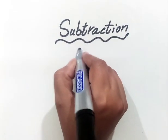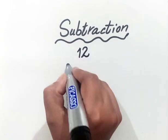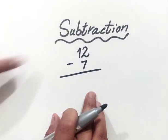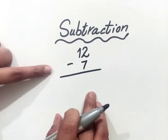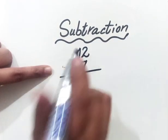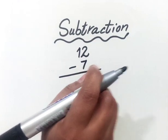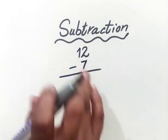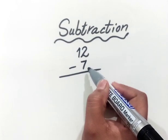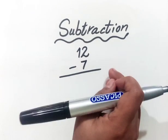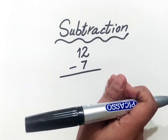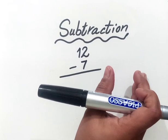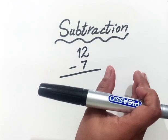Alright, the first question is 12 minus 7. This is the sign of minus, also called the sign of subtraction. 12 minus 7 — this is the easiest way for kids to understand and do subtraction.